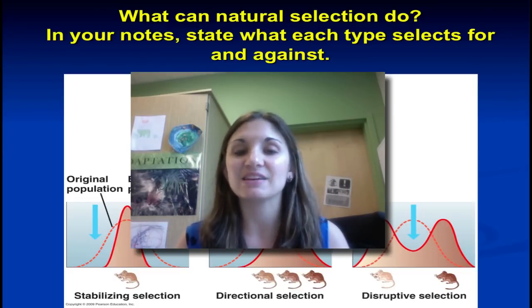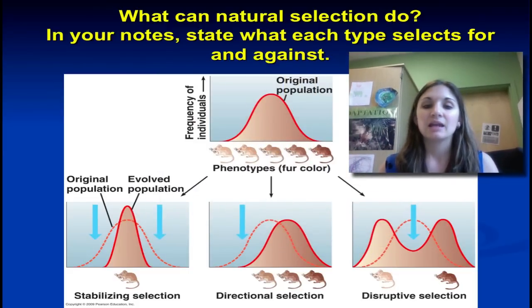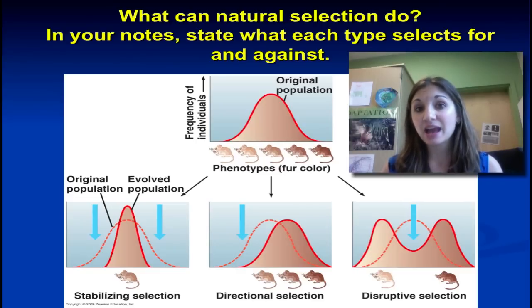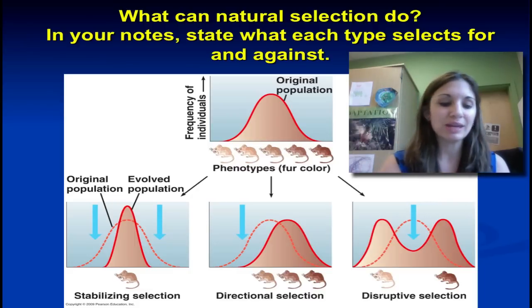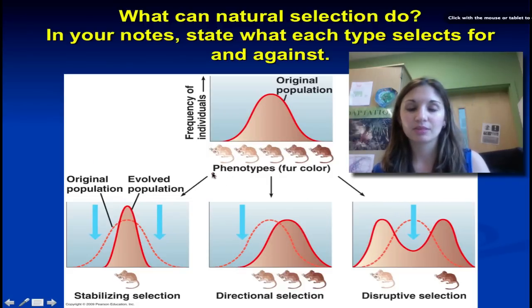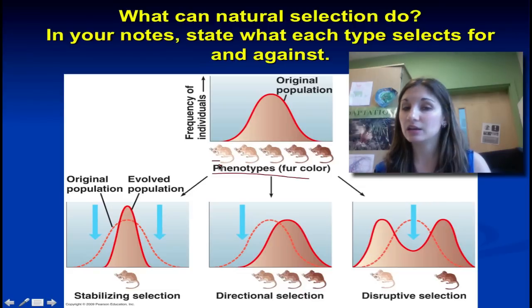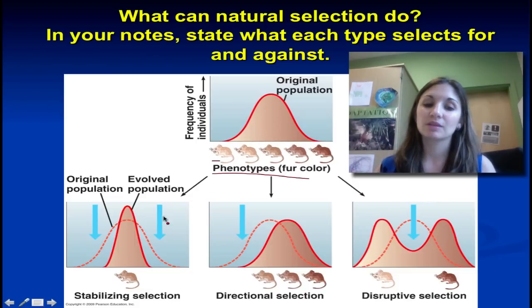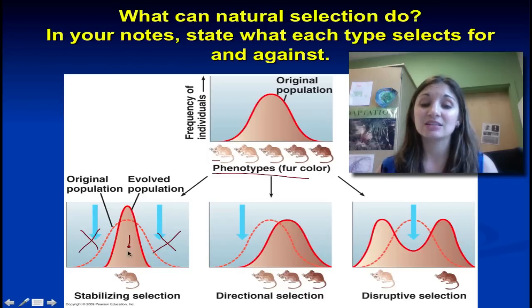There are three different kinds of natural selection at work. Natural selection can act as a stabilizing factor, it can act in one direction, or it can disrupt a population. These can all give rise to speciation if we're thinking ahead. If we consider a population of mice with variation in fur color, and the majority of the population is in the middle, in stabilizing selection the extremes are selected against and the average trait is favorable — therefore the average trait will increase in frequency.